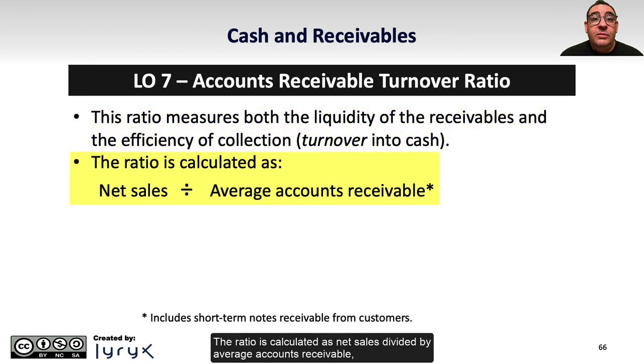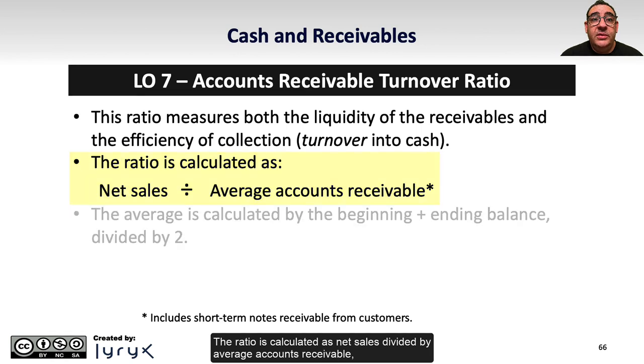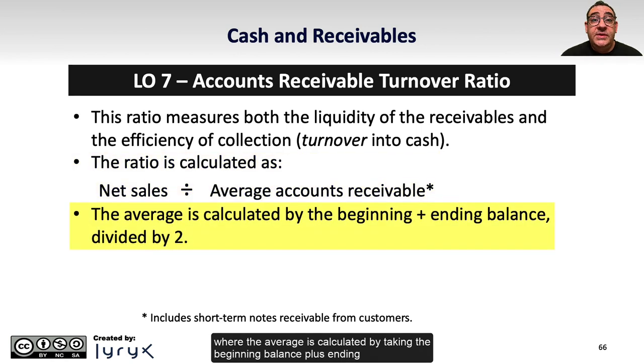The ratio is calculated as net sales divided by average accounts receivable, where the average is calculated by taking the beginning balance plus ending balance on accounts receivable and dividing by 2.